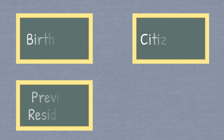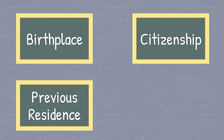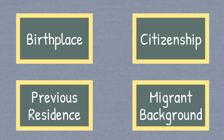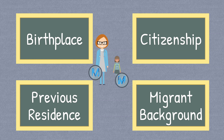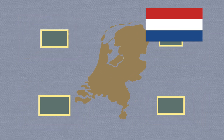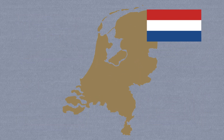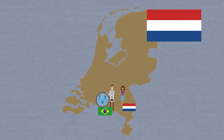For the most part, these three options mean the same thing across different countries. That's not the case for the fourth option: migrant background. Depending on which country is collecting the data, having an immigrant parent may classify children born and raised in a destination country also as migrants. This is the case in the Netherlands, where children born and raised in the country count as immigrants if one or both parents immigrated to the Netherlands.